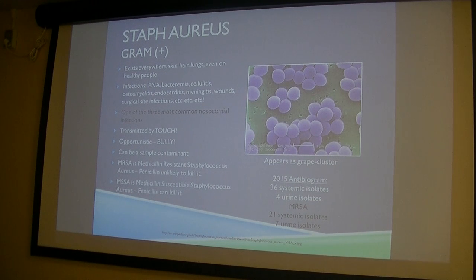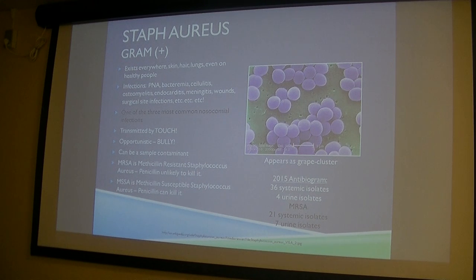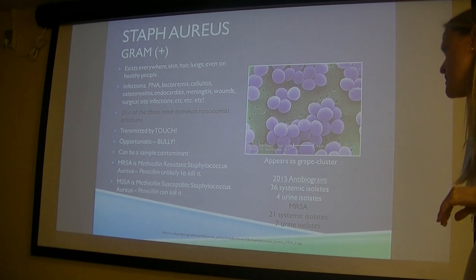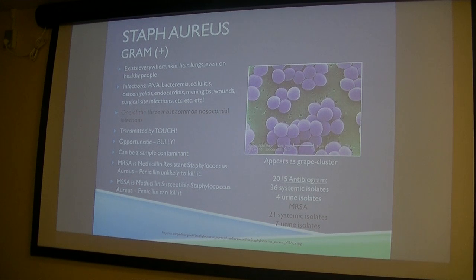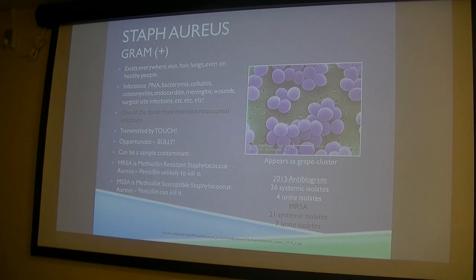Staph aureus is transmitted by touch. It's an opportunistic bully and can also be a sample contaminant because it's on everything. MRSA is the really bad kind because penicillin can't touch it. MSSA is the susceptible kind, meaning penicillin can kill it. In any situation, we should be using a more targeted antibiotic rather than a big bazooka to take care of MSSA.